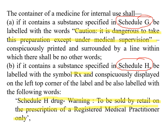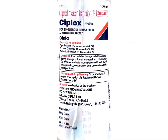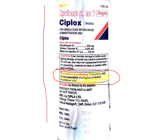Looking at a label example: the top left-hand corner shows Rx, so it's a Schedule H drug, and the Schedule H drug warning is displayed — 'to be sold on the prescription of a registered medical practitioner only' — and these wordings are inside a box in which no other wordings are displayed. This is how the pharma company ensures all provisions of the DNC Act and rules are complied with, from the top to the bottom of the label.